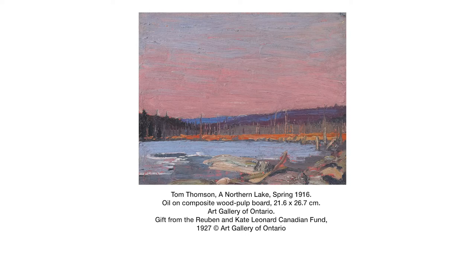Tom Thomson's A Northern Lake was painted in spring 1916. It is painted using oil on composite wood pulp board and measures 21.6 cm by 26.7 cm. This painting is currently at the Art Gallery of Ontario and was a gift from the Reuben and Kate Leonard Canadian Fund. The composition of this landscape painting is as though the viewer has stepped onto a rocky shoreline and is looking across the lake to dense rows of bare trees and a line of hazy rolling hills in the distance. The generously applied paint and expressive brush strokes on the water suggest that there may have been a slight current that day.